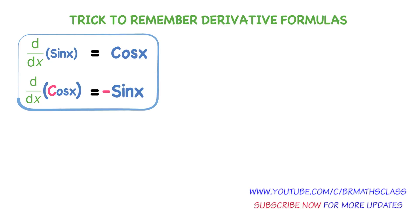Actually the trick is: we have three trigonometric functions which start with C — cos x, cot x, cosecant x. Derivatives of all these trigonometric functions start with a minus symbol. See here: derivative of cos x — cos starts with C, so derivative of cos x is minus sin x. It is easy to remember these two formulas: derivative of sin x is cos x, and derivative of cos x is minus sin x.